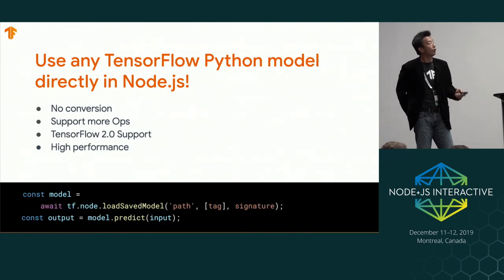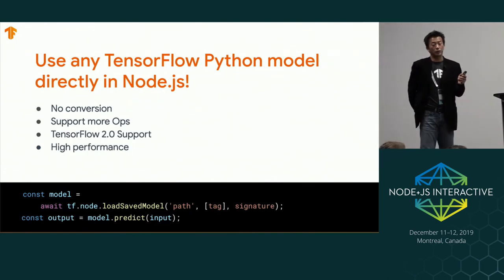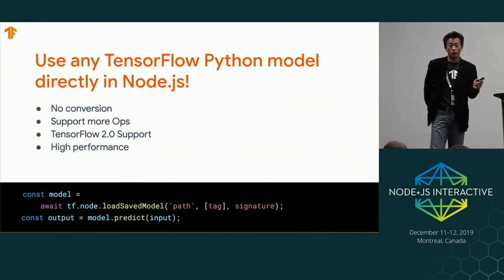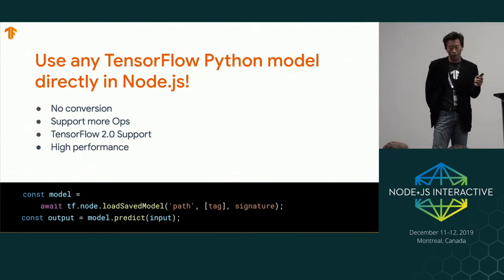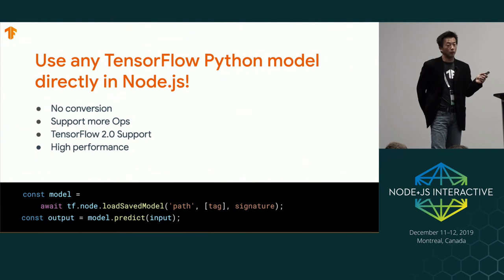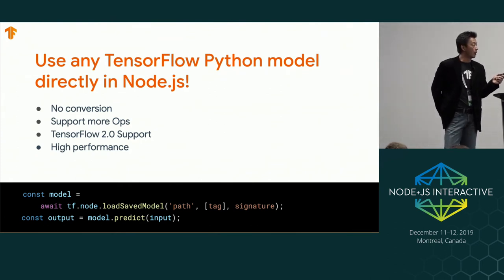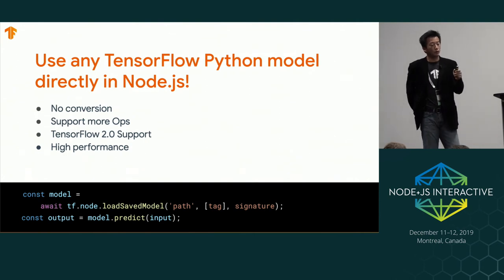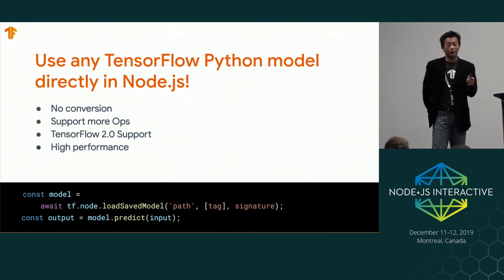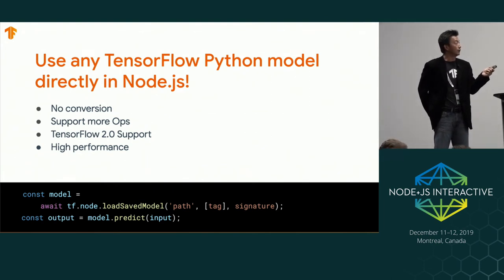For the server side, we just announced a new API. If you want to run a Python model inside Node, you no longer need to convert it — you can directly run it using our C library. This means you have better ops support. Our converter supports about 200 core TensorFlow ops, but TensorFlow has about 1,000 ops total, so this new approach gives you all 1,000 ops. You can run really powerful machine learning models inside Node right now. It supports both TensorFlow 1.0 and 2.0, and actually gives you better performance than running TensorFlow inside Python, because Node's V8 is faster than the Python layer.